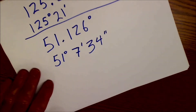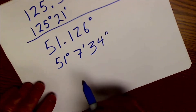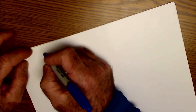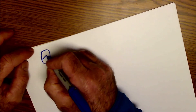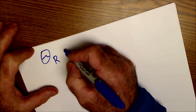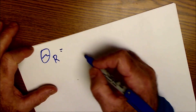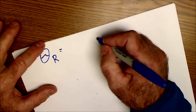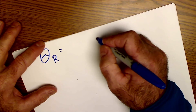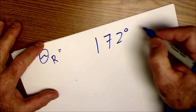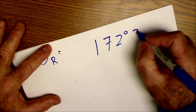So that's how you convert from decimal to DMS — degrees, minutes, seconds — and back again. Let me show you one more thing. If you were asked to find a reference angle, and you were given, say, 172 degrees, 30 minutes...